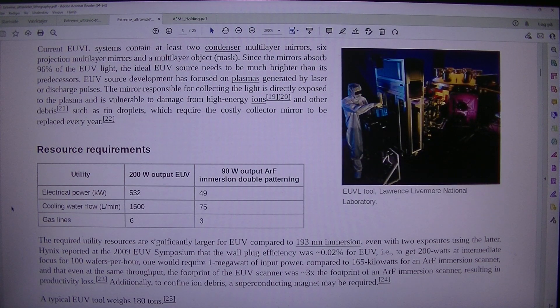Current EUVL systems contain at least two condenser multilayer mirrors, six projection multilayer mirrors, and a multilayer object mask. Since the mirrors absorb 96 percent of the EUV light, the ideal EUV source needs to be much brighter than its predecessors. EUV source development has focused on plasmas generated by laser discharge pulses. The mirror responsible for collecting the light is directly exposed to the plasma and is vulnerable to damage from high energy ions and other debris, such as tin droplets, which require the costly collector mirror to be replaced every year.